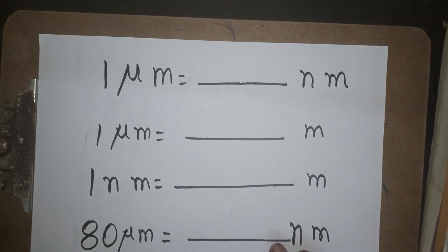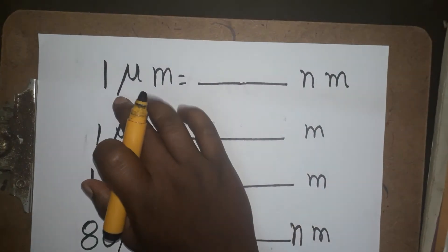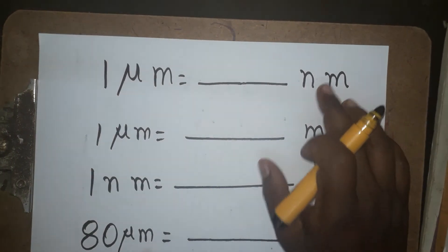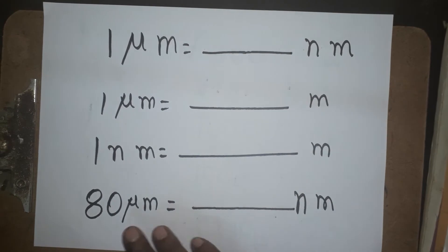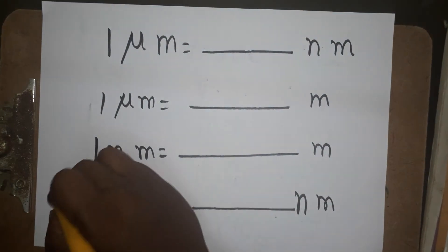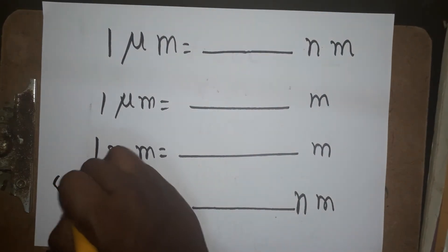Hello students, today we are going to learn how to convert from micrometer to nanometer, and also one example: 80 micrometers is equal to how many nanometers.